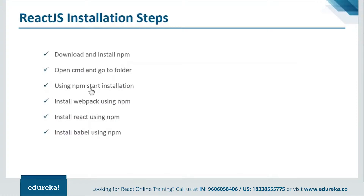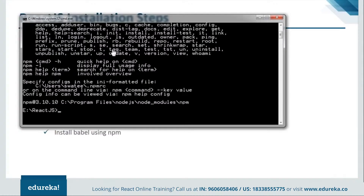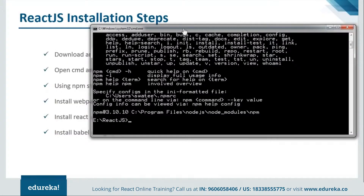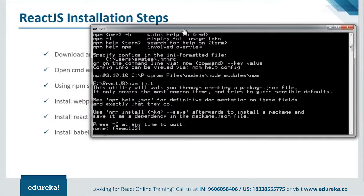Our next step is using npm start installation. I need the command prompt, and first I need to type npm init. This npm init will create one package.json file. As you can see, I have my package.json file here. It is asking whether my name is ReactJS. Everything should be in lowercase, so just give it a name like ReactJS — you can give it anything.